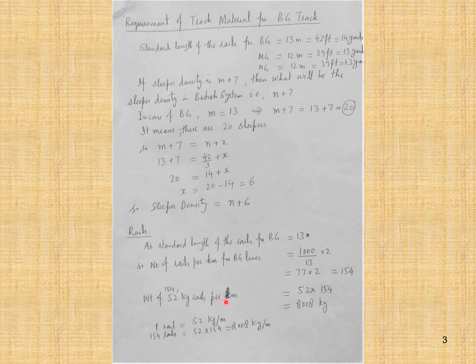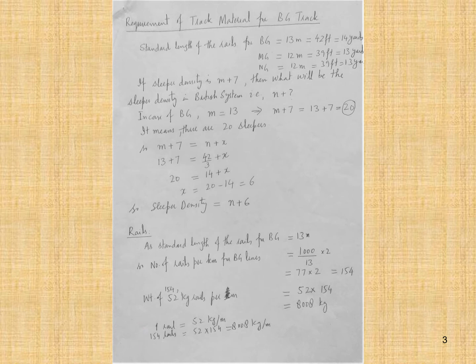The weight of 154 rails of the 52 kg/m section: since one rail has a weight of 52 kg/m, 154 rails weigh 52 × 154 = 8008 kg/m.